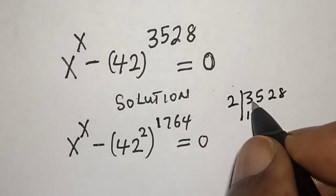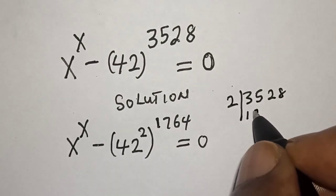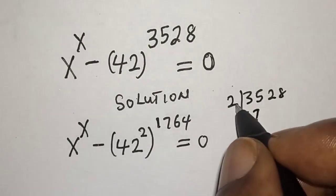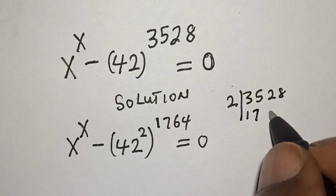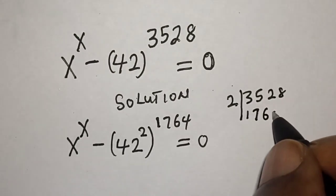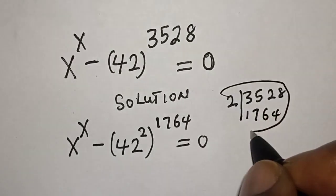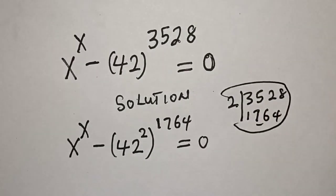Dividing 3528 by 2: 2 into 3 gives 1 remainder 1; into 15 gives 7; 2 into 12 gives 6; and 2 into 8 gives 4. So that is how we get the value 1764.